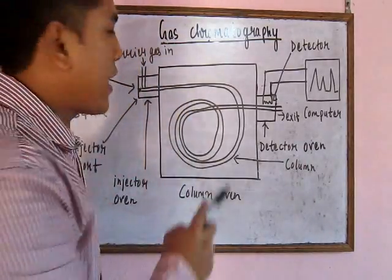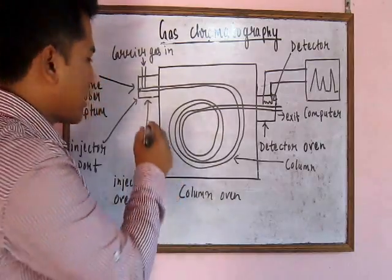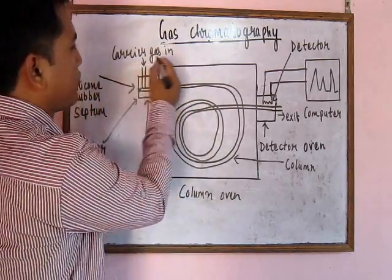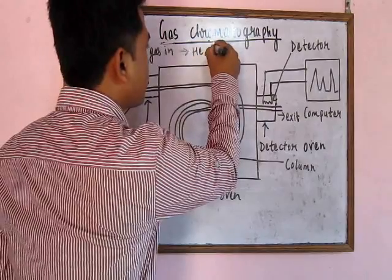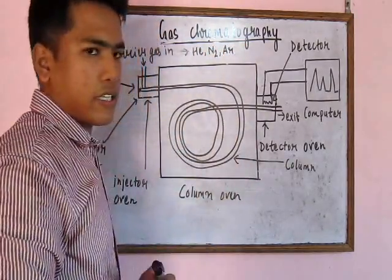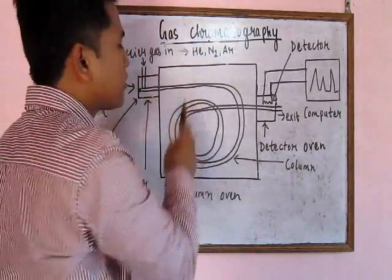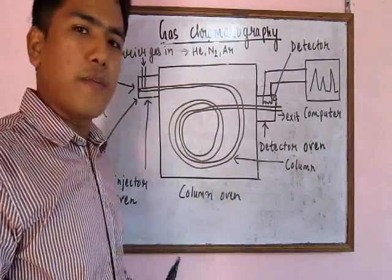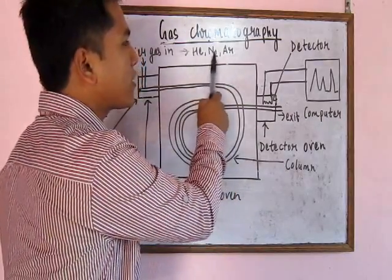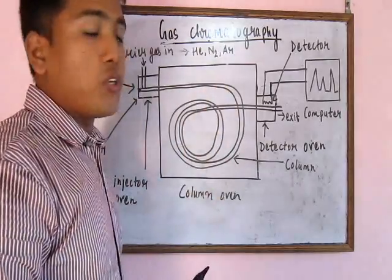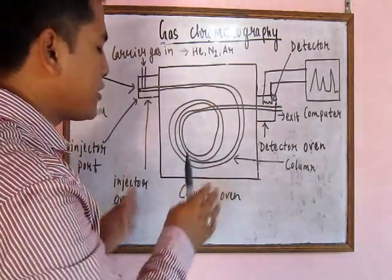In gas chromatography, gas is used as the mobile phase. The mainly used gases are the inert gases. The inert gases used in gas chromatography are helium, nitrogen, and argon. The reason we use inert or inactive gases is that these gases don't take part in chemical reactions, so the sample component will have no reaction with the carrier gas.